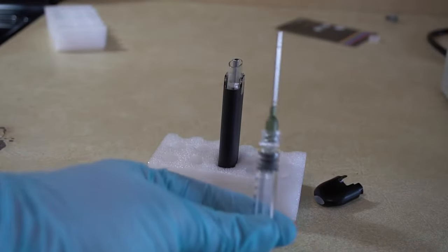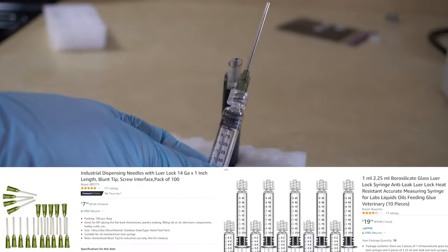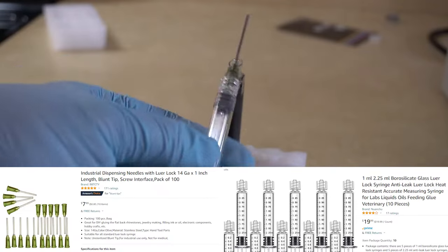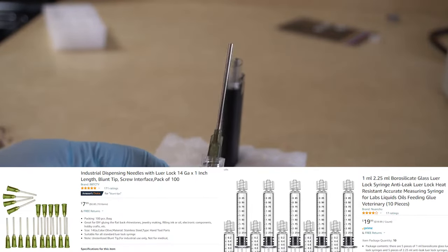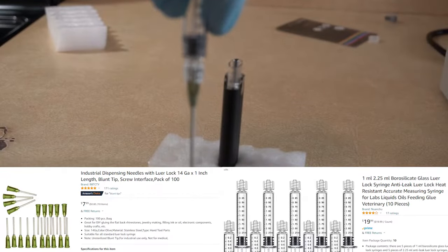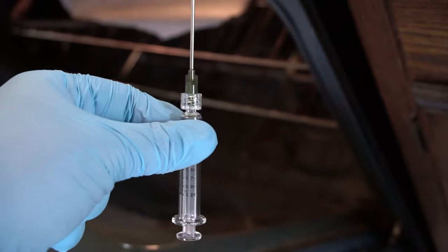So our first main object we're going to need here today is our glass syringe and a 14-gauge luer lock tip. Alright, so I usually put the stuff I warm up in the oven.